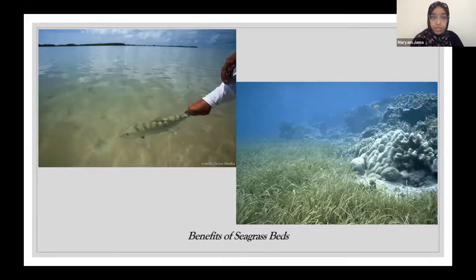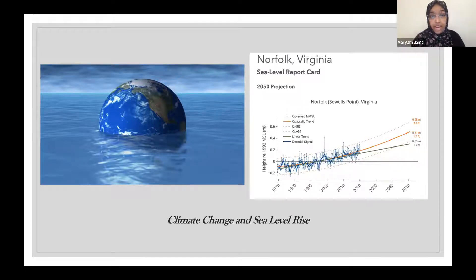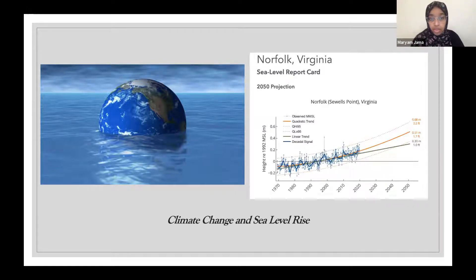Local peoples depend on fish for their livelihoods, and lots of fish are concentrated in seagrass areas. Unfortunately, climate change and sea level rise is changing that — as the world warms, sea level rises and creates bad conditions for seagrasses to thrive. It's critical to predict where sea level rise will happen and by how much so that we can protect the species that depend on seagrasses and support local peoples.